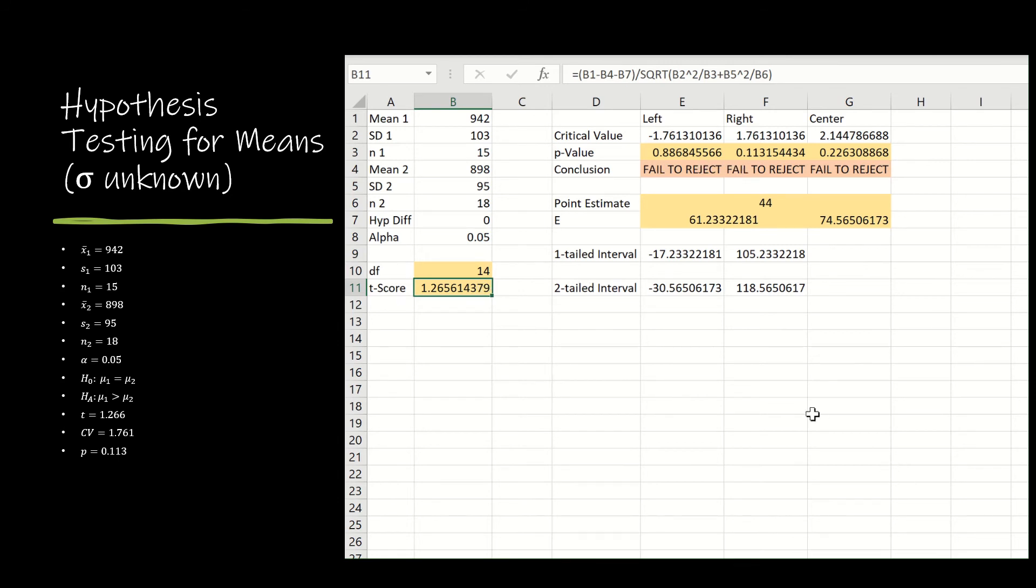In terms of critical values, again, this is a t model, so we should be using t inverse. So t inverse of alpha and the degrees of freedom, t inverse of 1 minus alpha and the degrees of freedom for a right-tailed test.